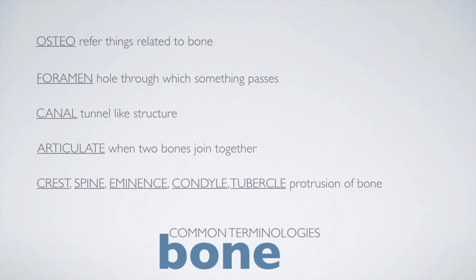There are some common terminologies related to bone. 'Osteo' refers to things related to bone. 'Foramen' is used when something passes through a bone. 'Canal' means a tunnel-like structure. 'Articulate' means when two bones join together. And 'Crest,' 'Spine,' 'Eminence,' 'Condyle,' or 'Tubercle' all refer to a protrusion of bone.